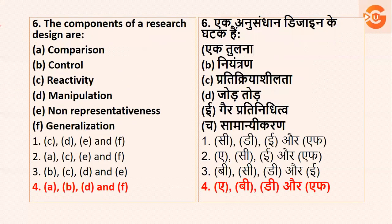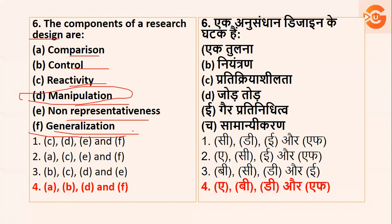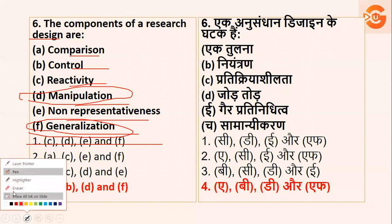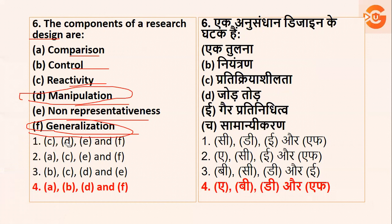Next is the components of research design. Research design ke components kya hai? Options include comparison, control, reactivity, manipulation, non-representative, generalization. Aapko pata hai manipulation hota hai and generalization — D and F saath mein honi chahiye. Jahan pe D and F saath mein nahi hai, woh options cancel. Also, reactivity is not a component — so option C cancel ho jata hai. Our option is option number four.